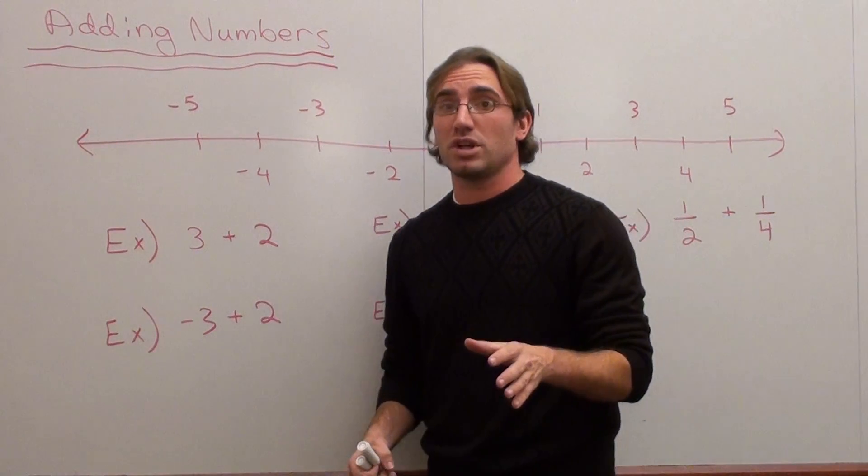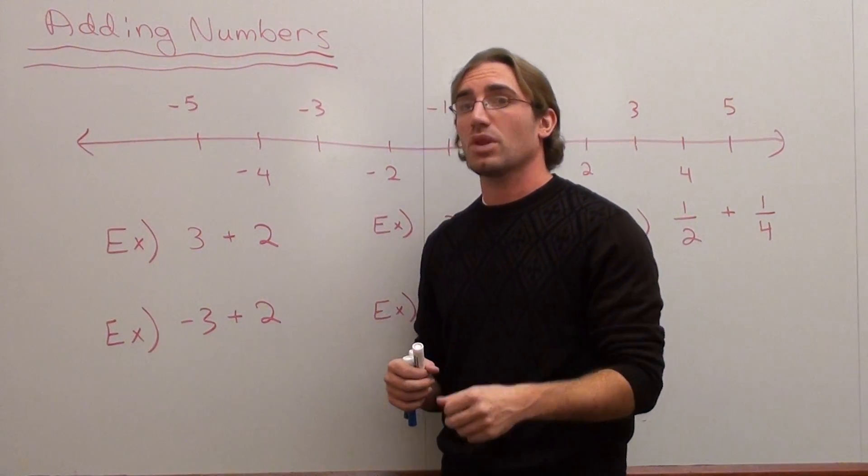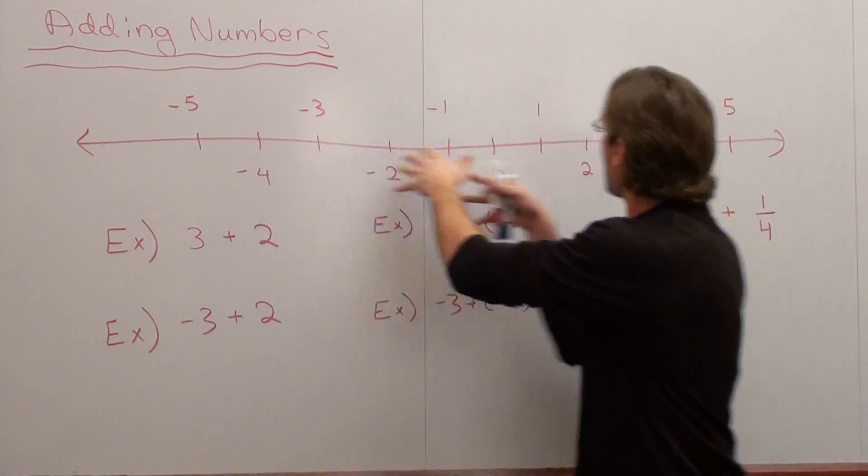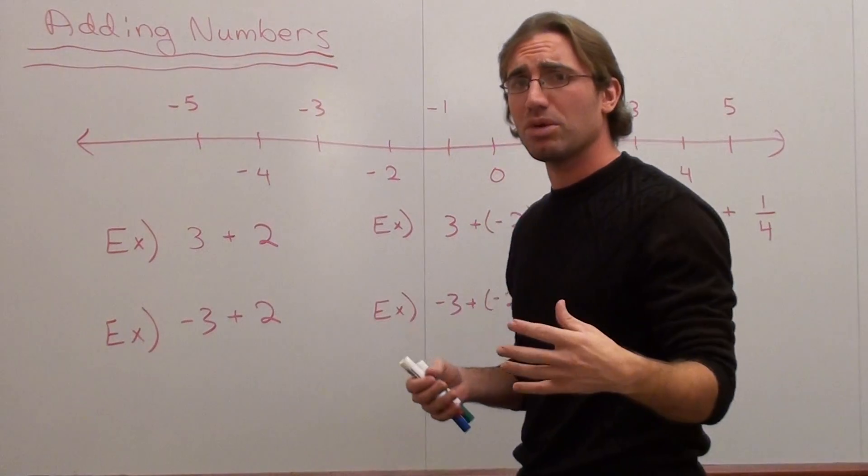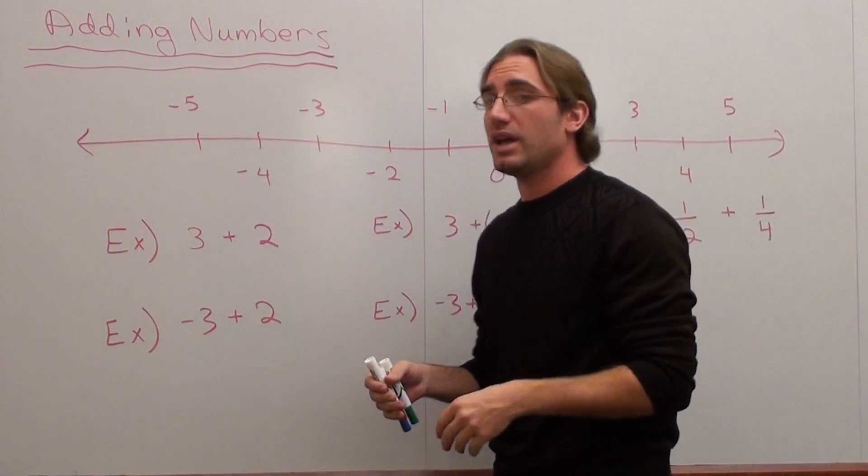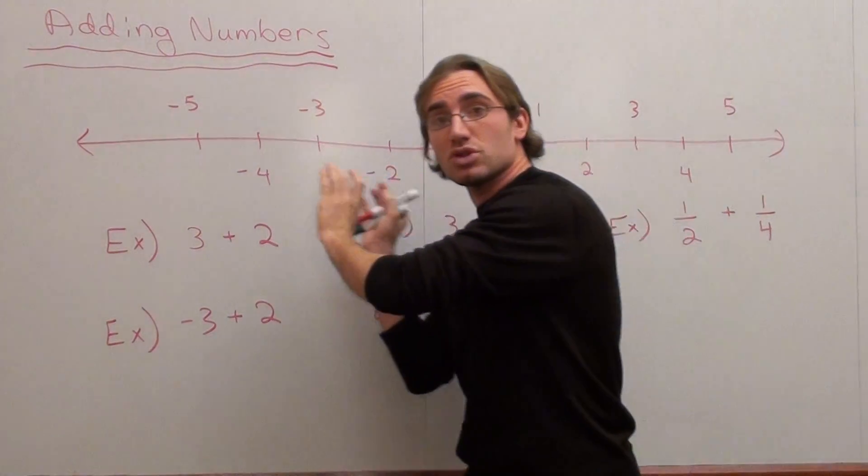Hello, today we're doing a basic introduction into adding numbers. I think it's very helpful to add numbers with a number line. I went ahead and drew a number line where you put zero in the middle, your positive numbers go to the right, and your negative numbers go to the left.